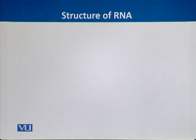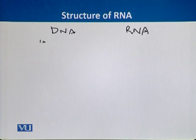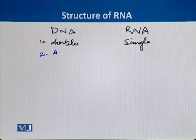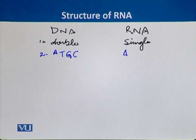Here we can see some differences between the DNA molecule and the RNA molecule. DNA is a double-stranded molecule; on the other hand, RNA is a single-stranded molecule. The second difference is that DNA has four nucleotides — adenine, thymine, guanine, and cytosine — but RNA also has four nucleotides: adenine, uracil (instead of thymine), guanine, and cytosine.